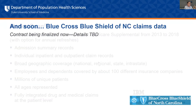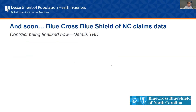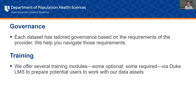We have access to MarketScan, a database currently managed by IBM that includes commercial claims from a number of different private insurers. The exciting news is that we're in contract finalization right now to get the Blue Cross Blue Shield North Carolina claims data — hopefully next year I'll be able to tell you all about the opportunities for those data within the Data Share. One of the big things the Data Share does is governance — every single one of these databases has specific and different requirements, and we have a lot of experience navigating all those pathways to approvals.